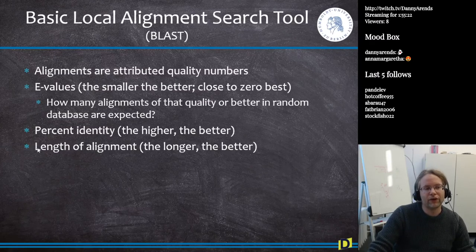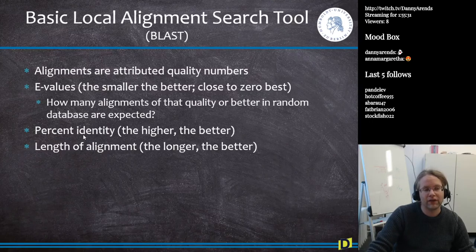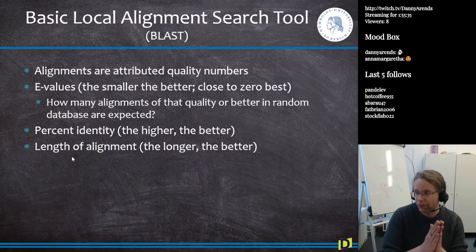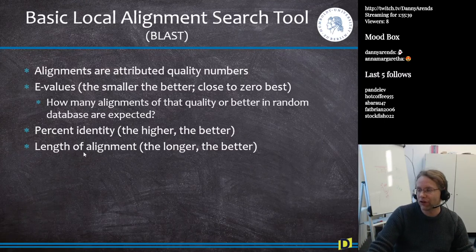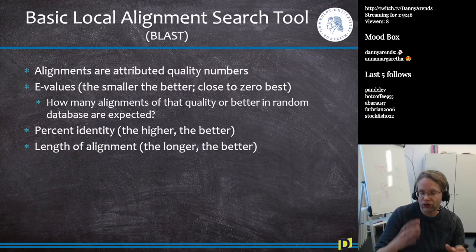Besides the E-value, BLAST also reports the percentage of identity — the higher the better, representing the number of matching base pairs out of the total — and the length of the alignment, i.e., the largest matching substring, showing how many base pairs of sequence one were aligned to sequence two.